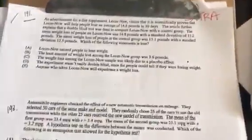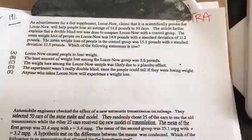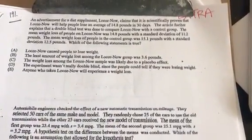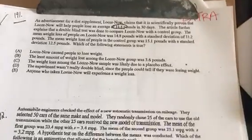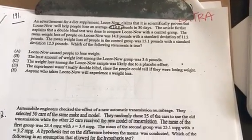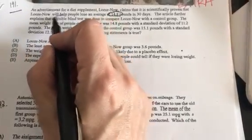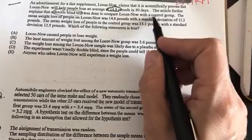I don't think I will have time, so let's do it. An advertisement for a diet supplement, Lose Now, claims that it's scientifically proven that people will on average lose 14.8 pounds in 30 days. The article further explains that it was from a double-blind test comparing Lose Now with a control group.